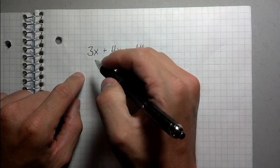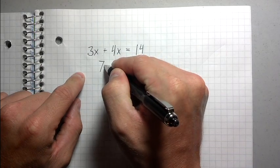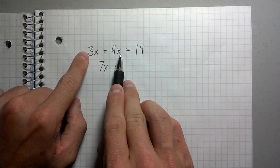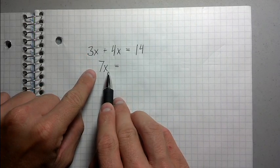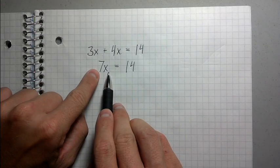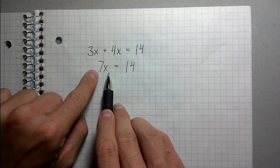So 3x and 4x, when I put them together, become 7x. Now, instead of 3x plus 4x equals 14, I have 7x equals 14. I rewrote 3x plus 4x as 7x.